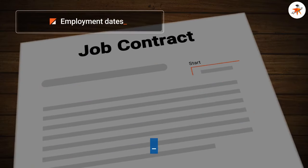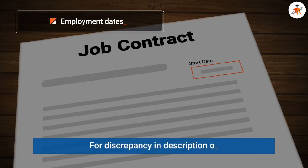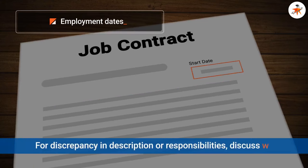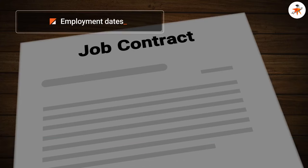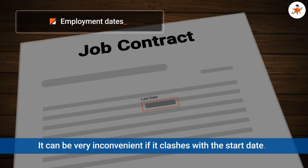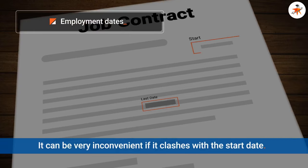Your precise start date should be clearly mentioned in your contract. Overlooking this date may sometimes cause trouble, especially when you are transitioning between jobs. It may be very inconvenient if your last day at your current job clashes with the start date of your new job. Therefore, check that the correct start date is clearly mentioned in your job contract.